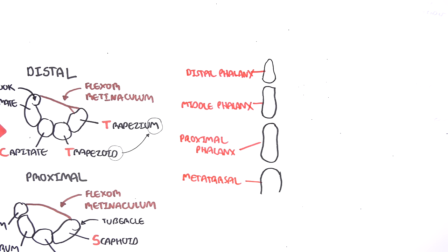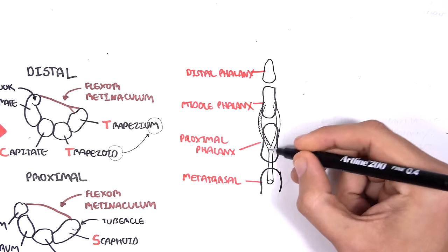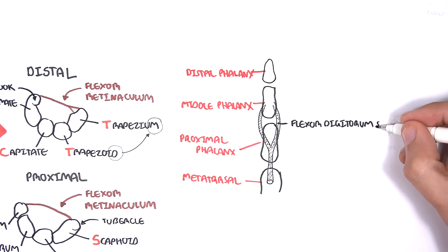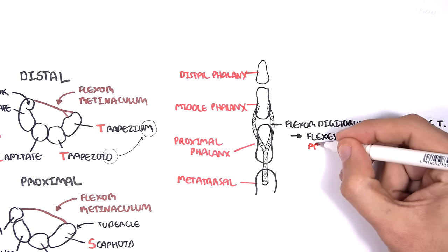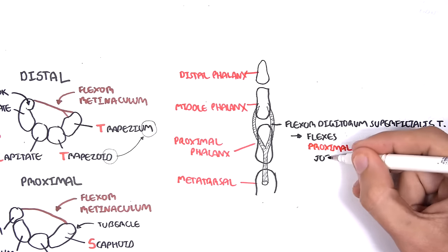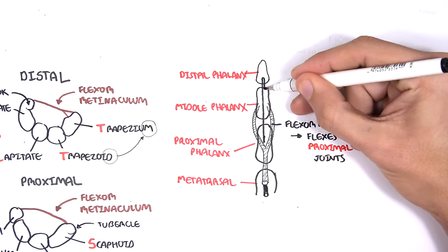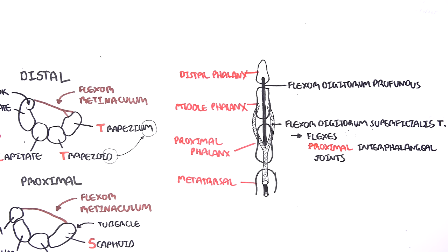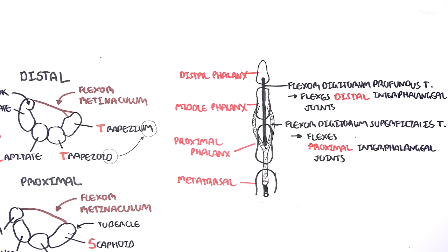Remember the tendons that run under the flexor retinaculum? This is where we talk about some of those tendons and where they attach on the finger. The flexor digitorum superficialis tendons run towards the proximal phalanges, then bifurcate and attach to the middle phalanx — so we can say the flexor digitorum superficialis tendon flexes the proximal interphalangeal joint. The flexor digitorum profundus tendon runs deep to the flexor digitorum superficialis and attaches to the distal phalanx without bifurcating — thus it flexes the distal interphalangeal joint.